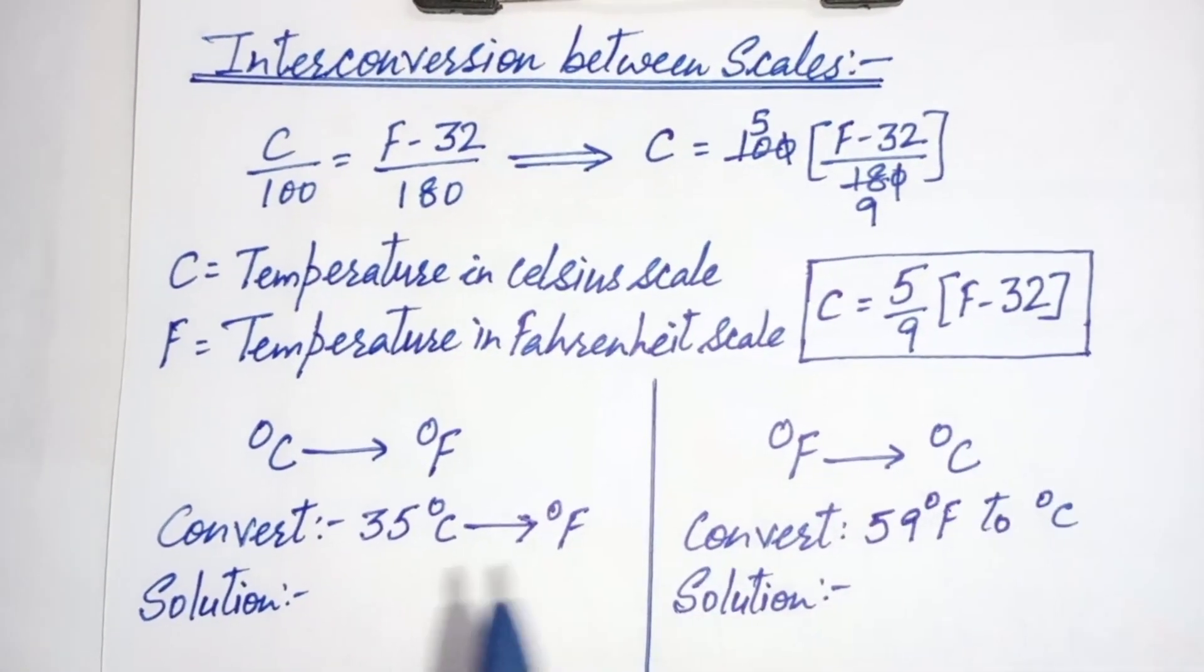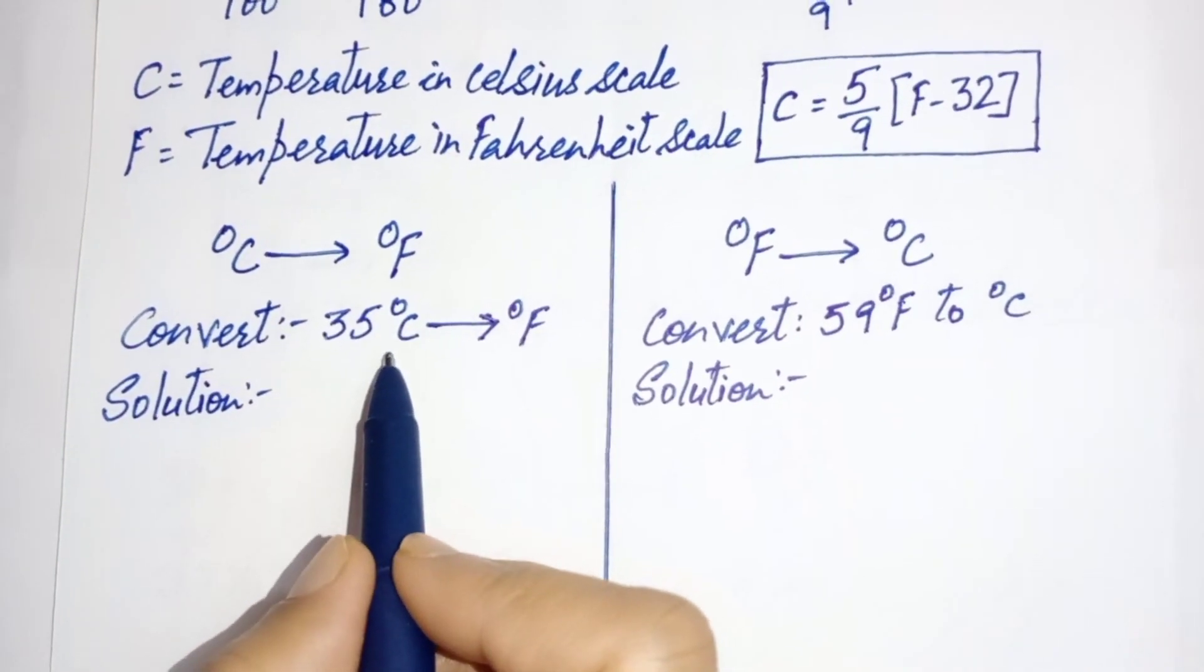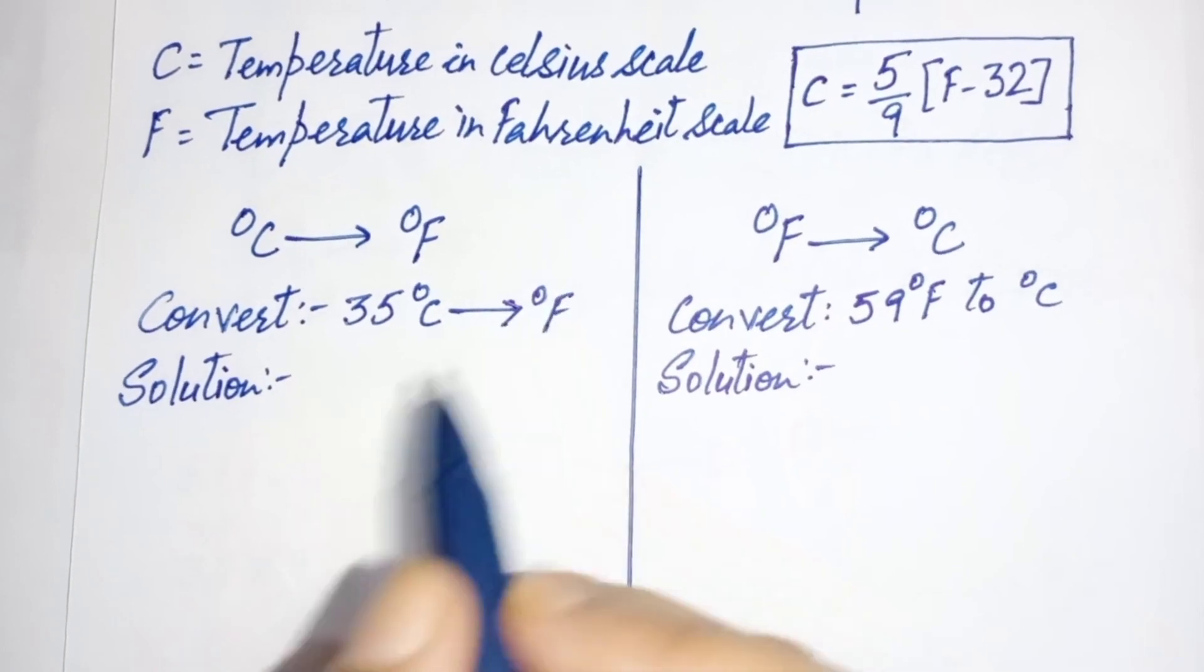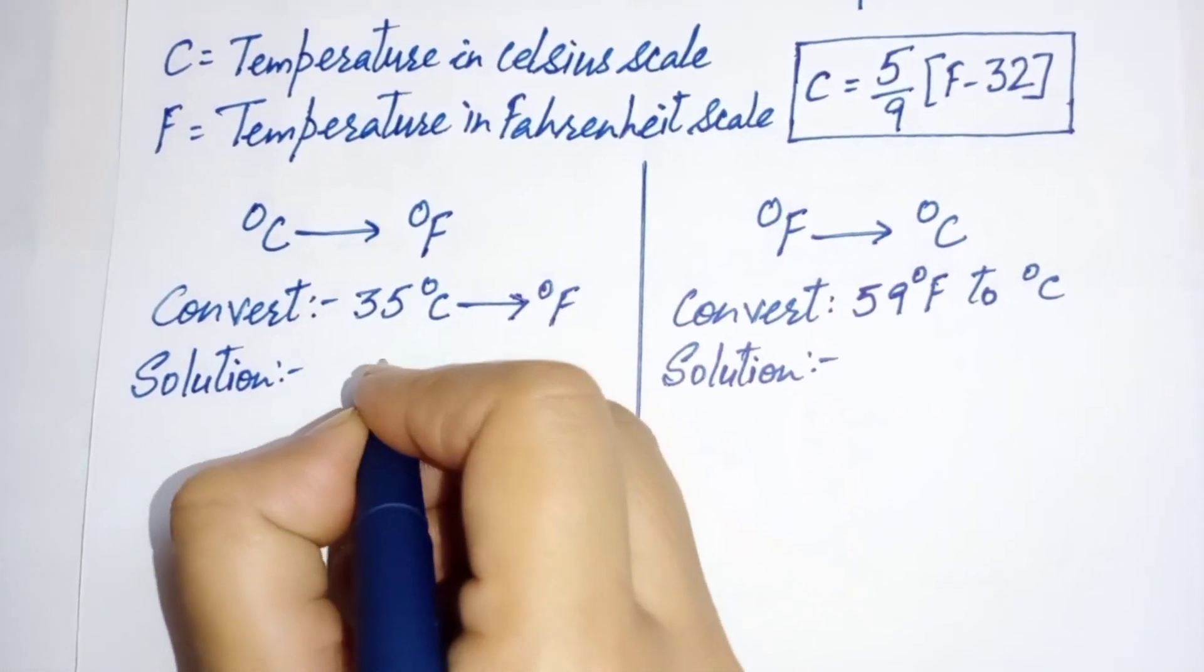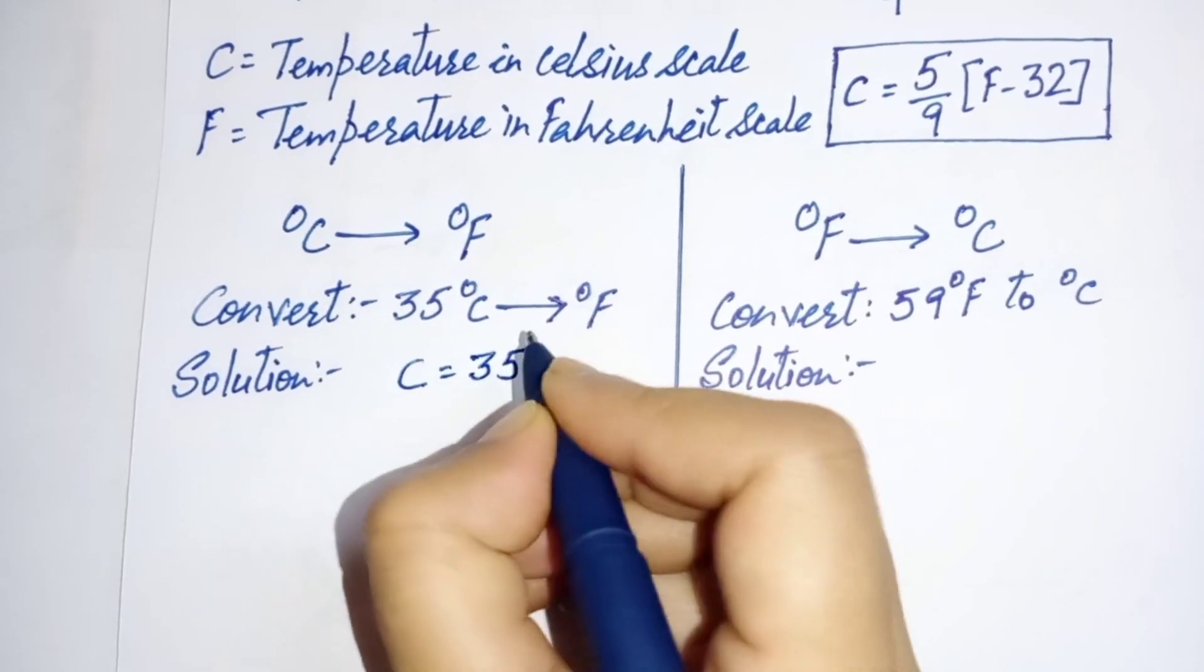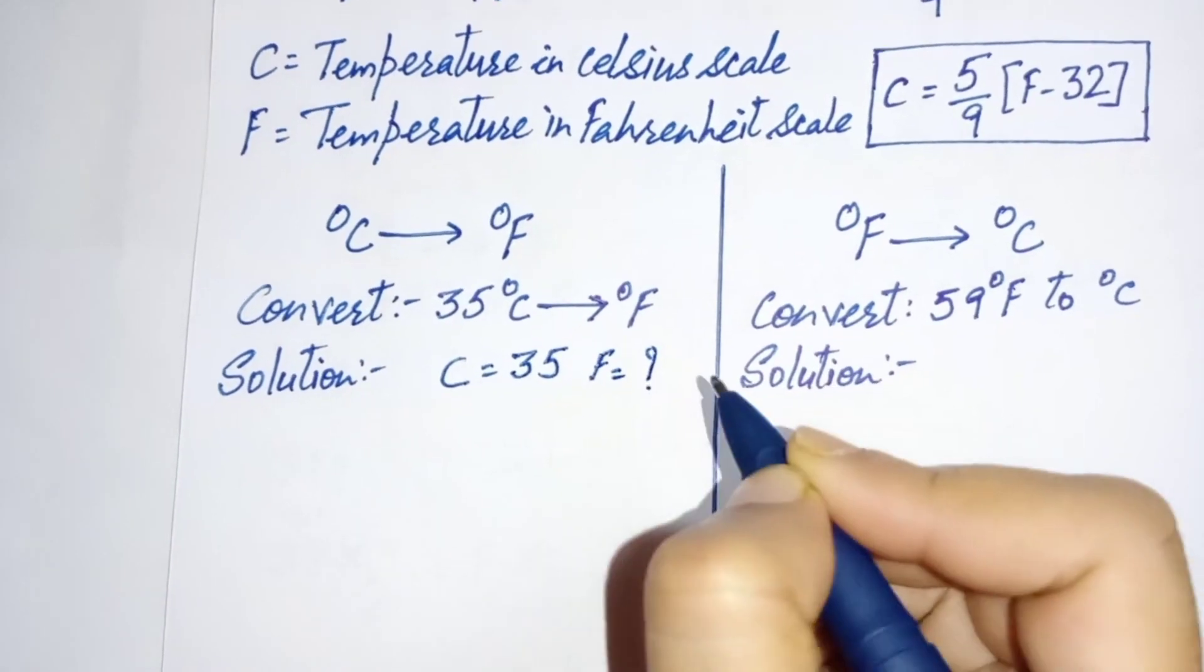Suppose we need to convert 35 degree Celsius to degree Fahrenheit. Here C is 35 given and we have to find out value of F.